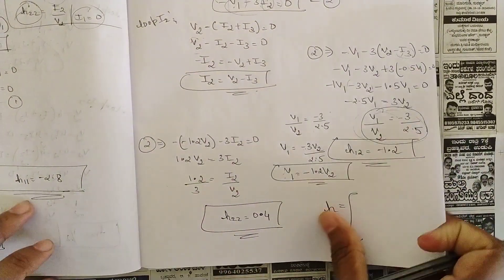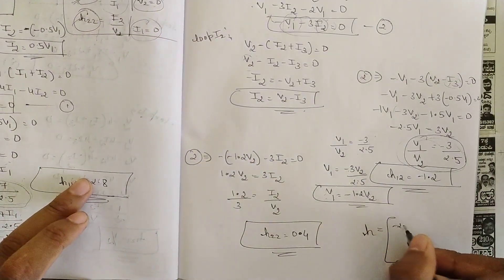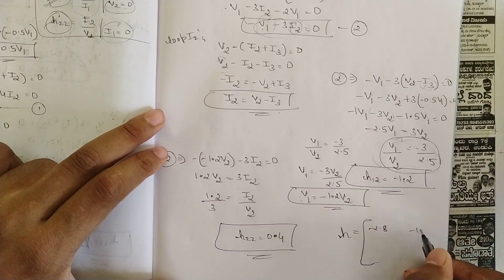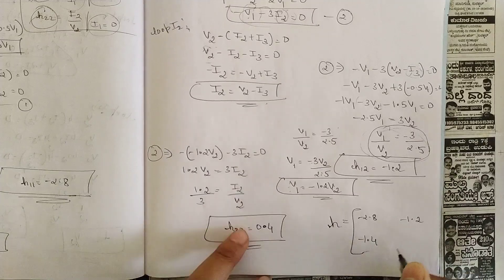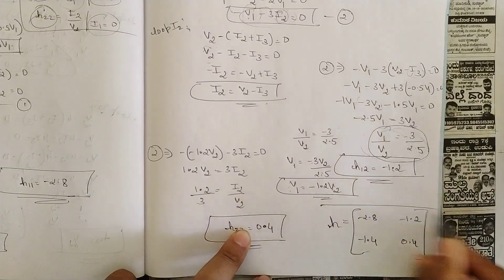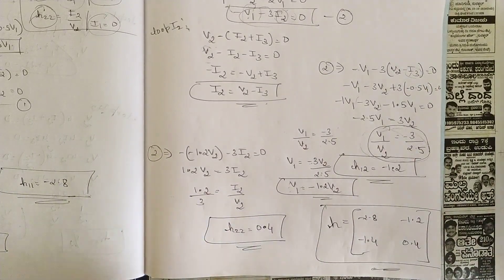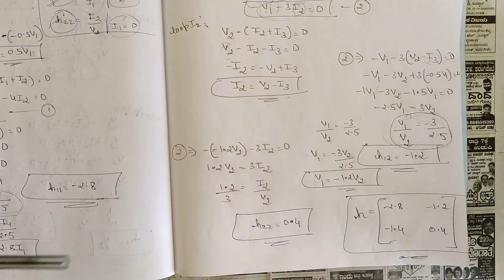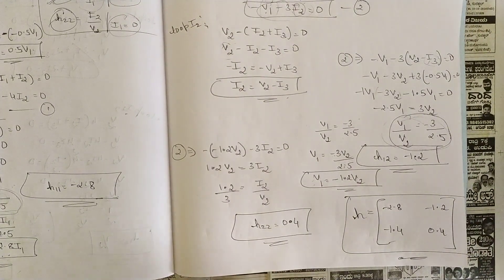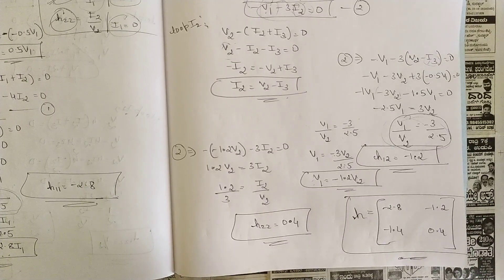All four h parameters are now found: h11 = minus 2.8, h12 = minus 1.2, h21 = minus 1.4, h22 = 0.4. Write these in matrix form to conclude. This was a complex but important repeated exam question. In the next session we will start with T parameters. Please like, share, and subscribe. Thank you.